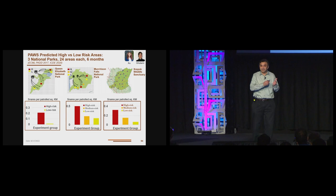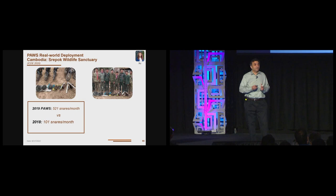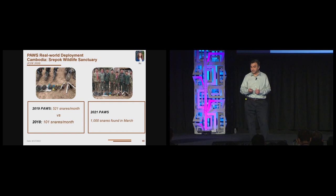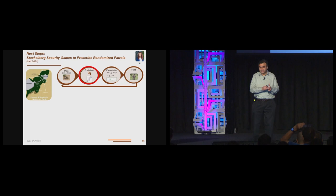The rangers didn't know which area was which. They were just asked to patrol these and come back. And indeed, where we predicted high-risk, more snares were found. Where we predicted low-risk, less snares were found. In the Srepok Wildlife Sanctuary, these are pictures from snare captures based on PAWS. 2018, before PAWS, 100 snares per month roughly. After PAWS, more than 500 snares per month. Snare capture jumped more than five-fold. In 2021 alone, 1,000 snares were found per month in March.